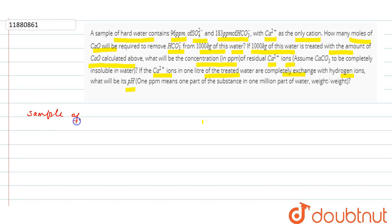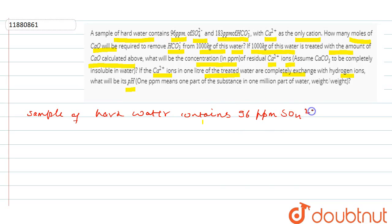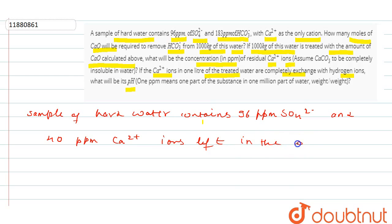Sample of hard water contains 96 ppm of SO₄²⁻. So, Ca²⁺ and SO₄²⁻ are present.